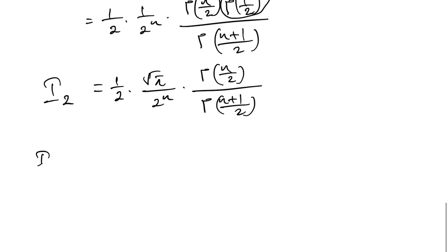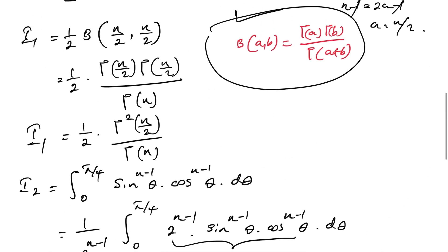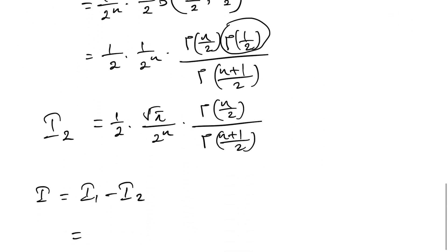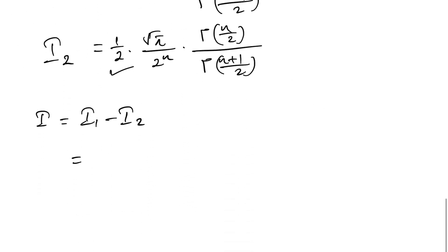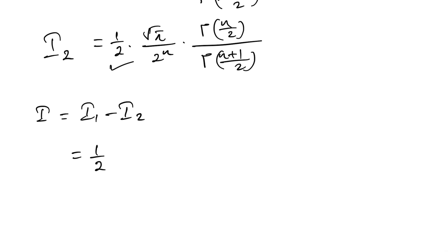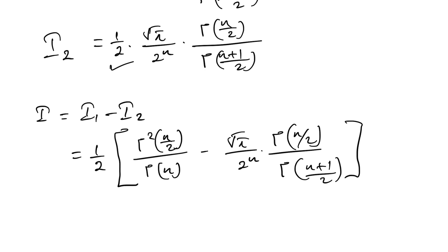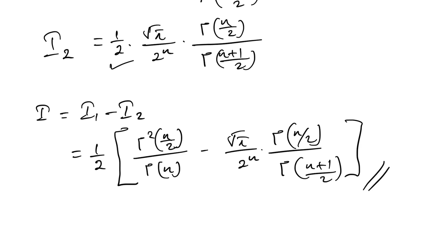Our final answer is I = I1 − I2, so I = (1/2) · [Γ(n/2)² / Γ(n)] − (√π / 2) · Γ(n/2) / (2ⁿ · Γ((n+1)/2)). To obtain the value for the original problem, substitute n = 2023 into this expression. If you like this type of video, please subscribe to the channel. Thank you for watching.